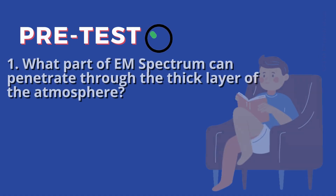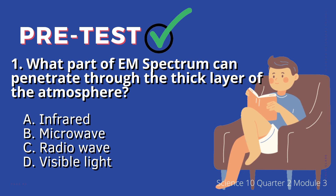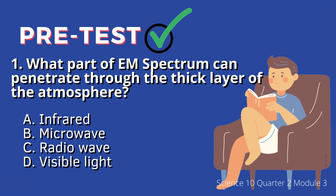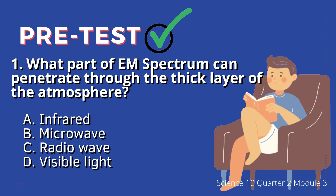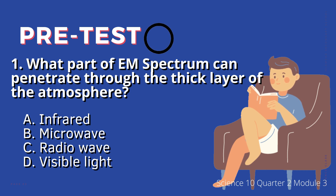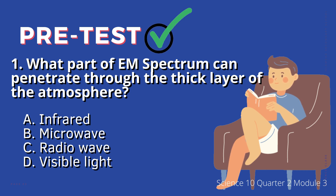1. What part of the EM spectrum can penetrate through the thick layer of the atmosphere? A. Infrared, B. Microwave, C. Radio wave, D. Visible light.